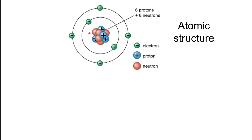An atom is made up of a nucleus, which is composed of positively charged protons and neutrally charged neutrons. Around the outside, in shells, there are electrons spinning around. The number of electrons is normally equal to the number of protons.